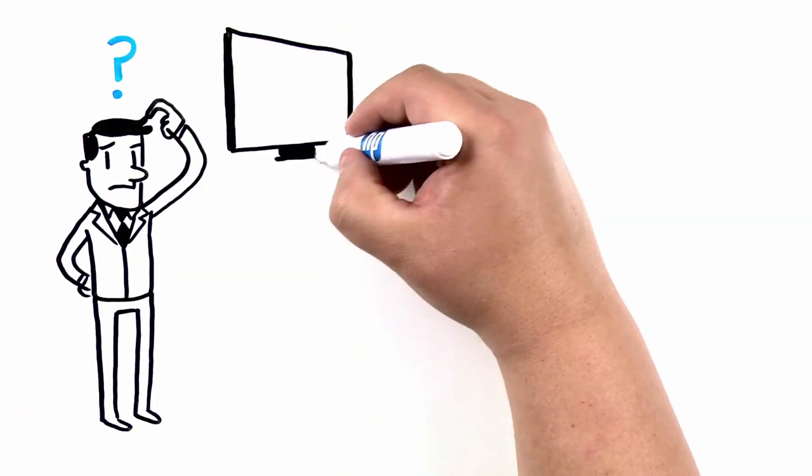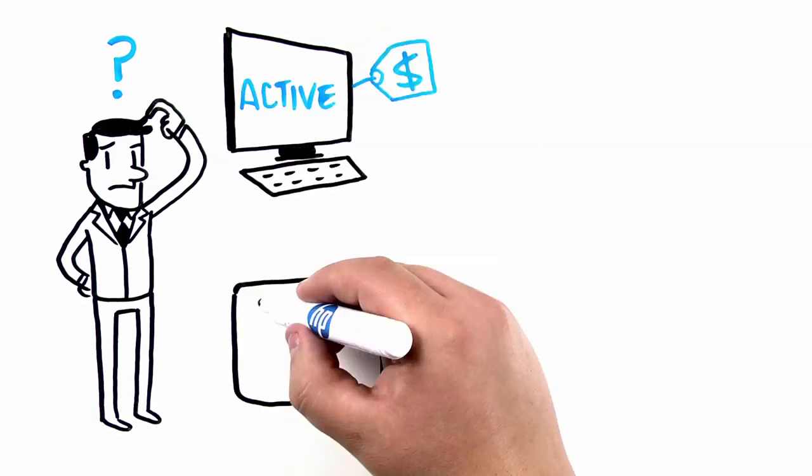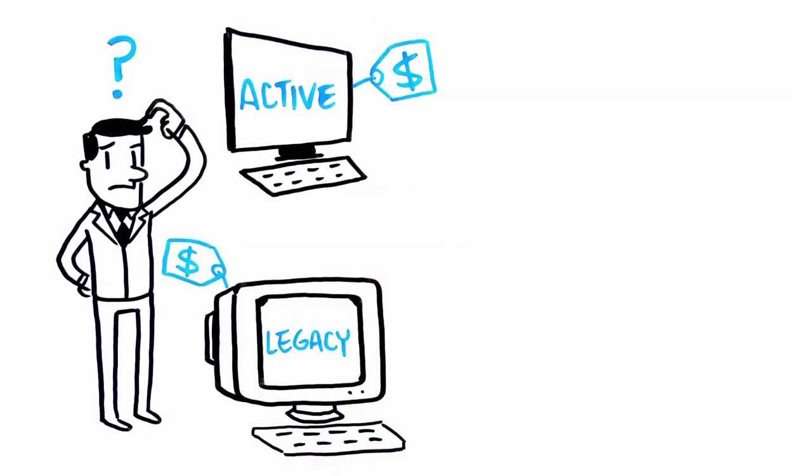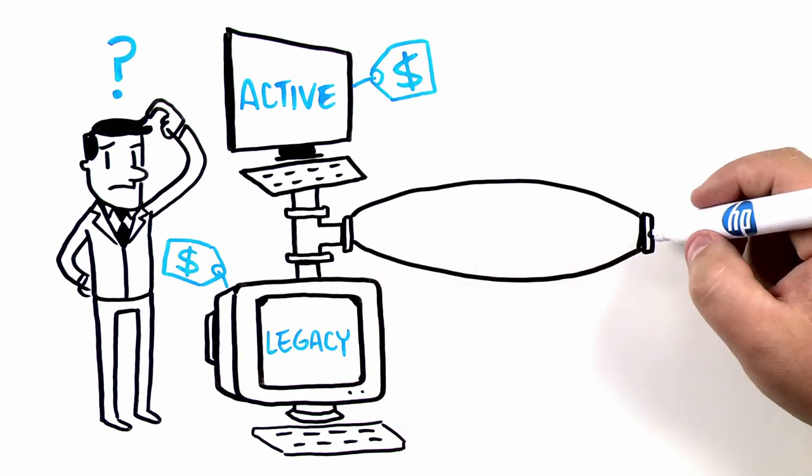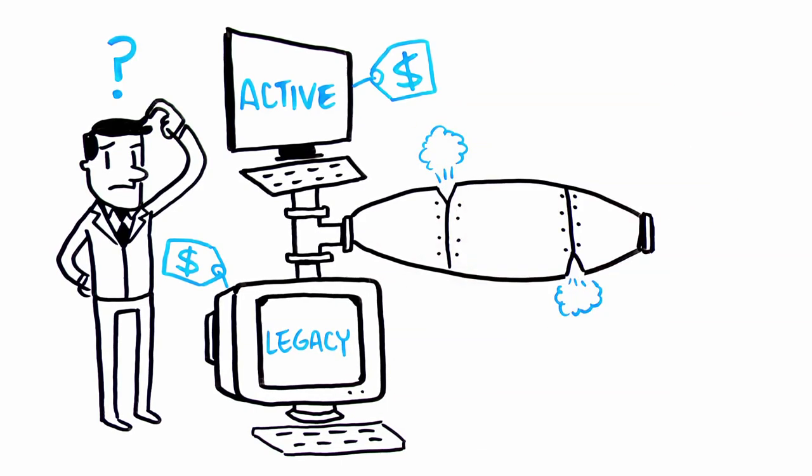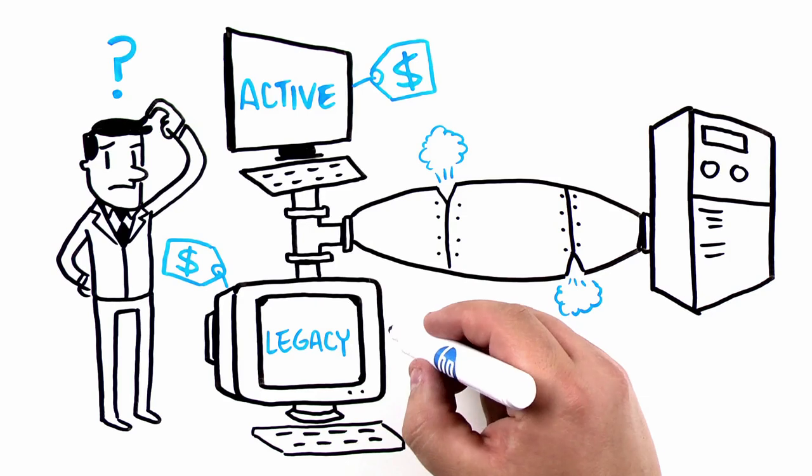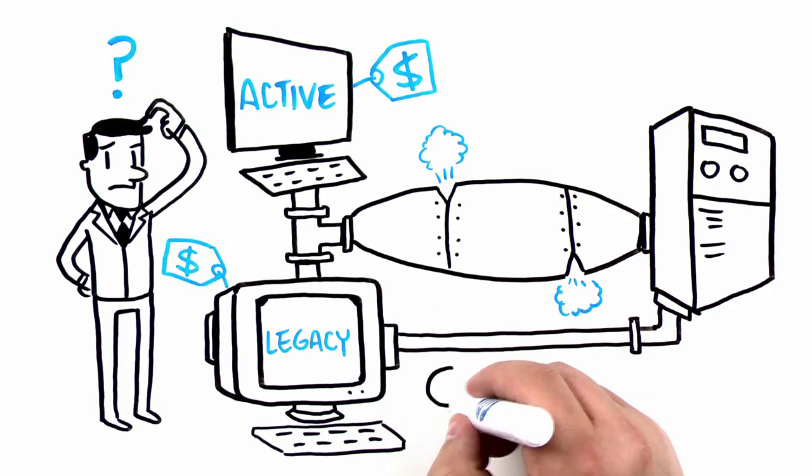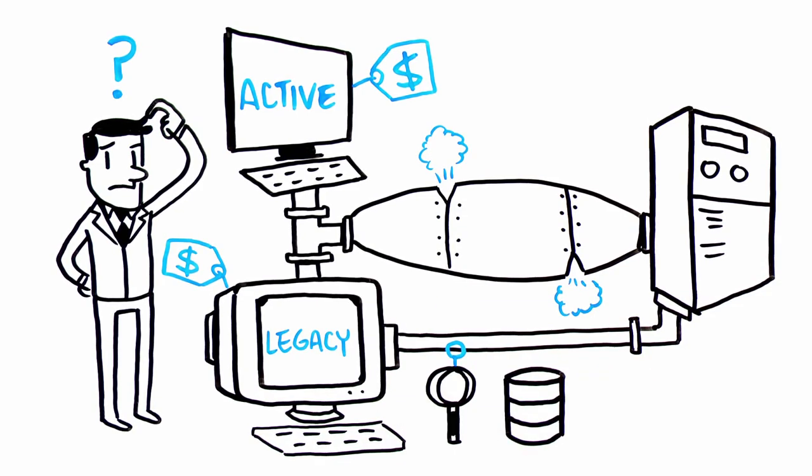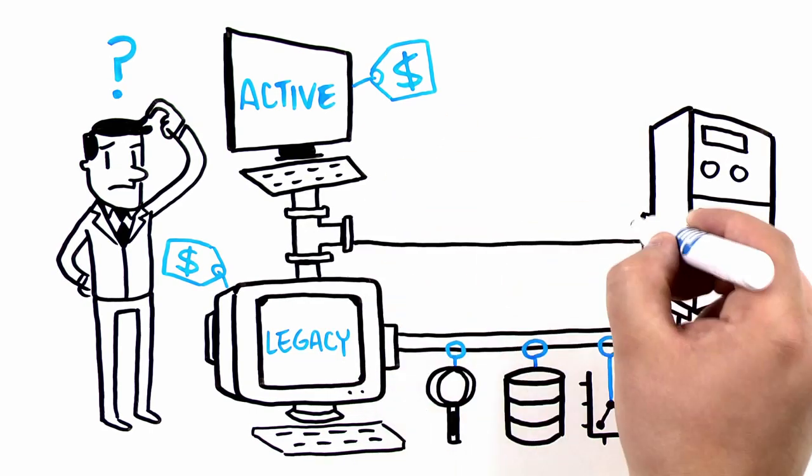First, you must understand the value of your data in both active and legacy systems. Not all organizations are ready to implement an end-to-end information governance solution initially. Many begin by addressing a subset of their legacy data—data of a certain type, in certain repositories, or in different departments—as a first step in a longer-term process.